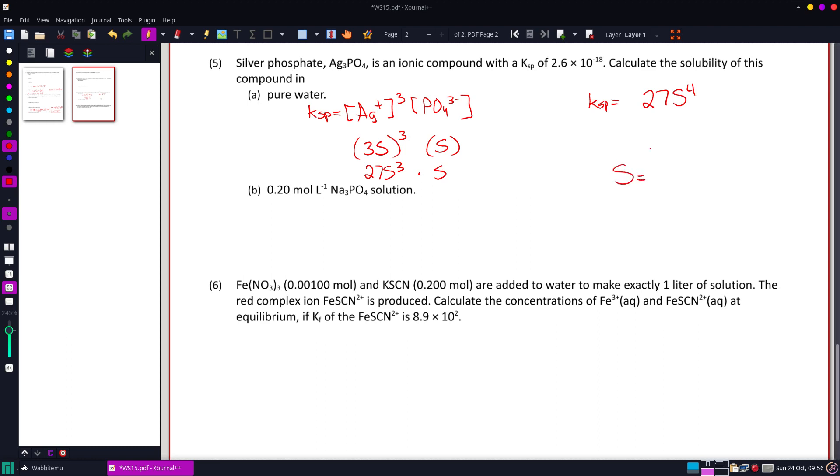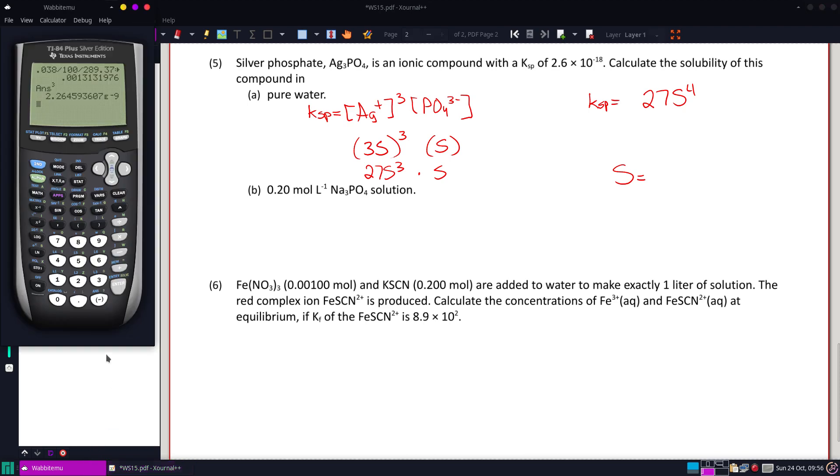So let's get out the calculator and solve for S. So our Ksp is 2.6 times 10 to the negative 18th. And we'll start by dividing by 27. And then get the fourth root of that. So I get a solubility of 1.8 times 10 to the negative 5th.